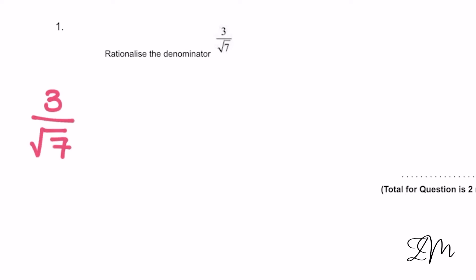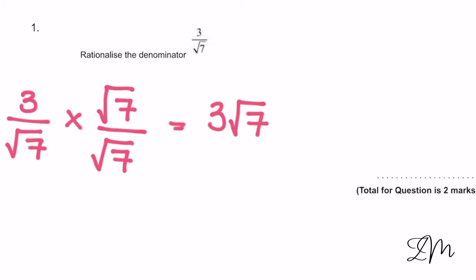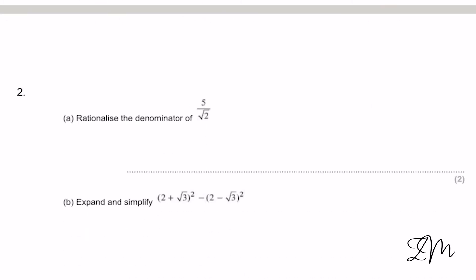We want to get rid of that √7 on the bottom, so we're going to times top and bottom by √7. So we get 3√7, and then √7 times √7 — remember — is 7. And that's your final answer: 3√7 over 7.